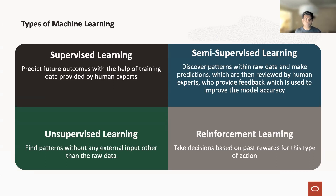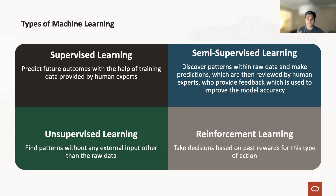The third category is unsupervised, where you give the model raw amounts of data and the model can figure out patterns without any input from people. You can give it data and look for fraud information, social security data, or a certain kind of attack vector — it looks for patterns that you might not understand or see based on initial observation. That's why these machine learning algorithms are very good. And then there's reinforcement learning, where you take decisions based on past rewards for a type of action. These are four broad categories of machine learning.